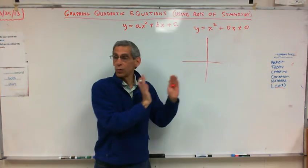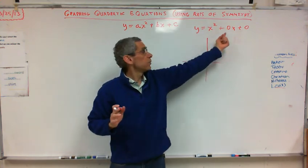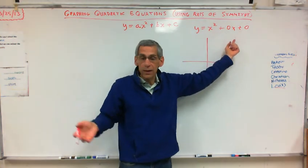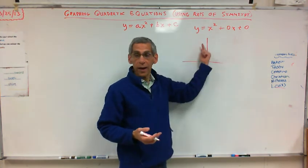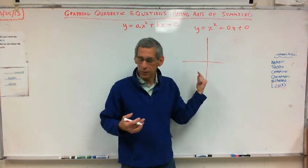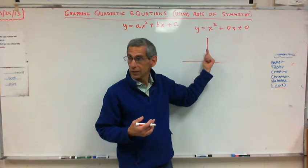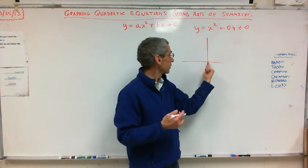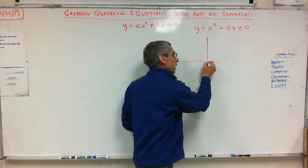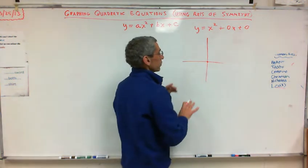The b is what moves it off the y-axis to the left or the right. And since b is zero, there's no b, right? So it's going to be on the y-axis. And then your c is your y-intercept. It's where your parabola intersects the y-axis. And since it's zero, it's zero. So that's my vertex. I know that's my vertex because it doesn't go left to right.